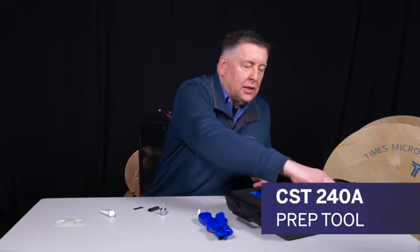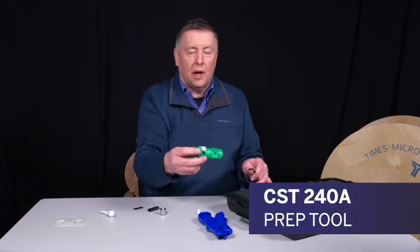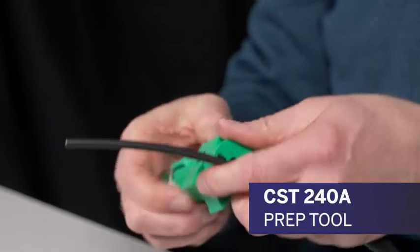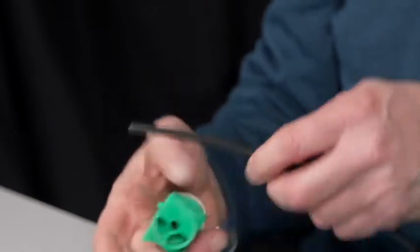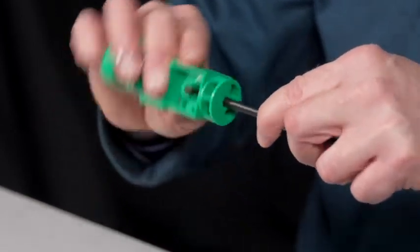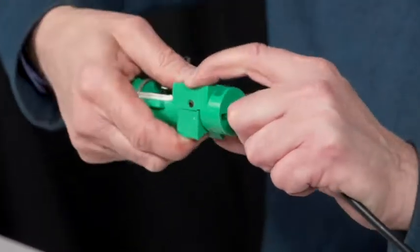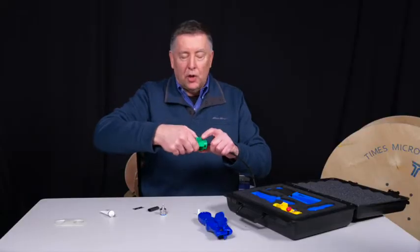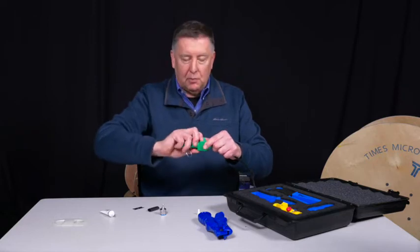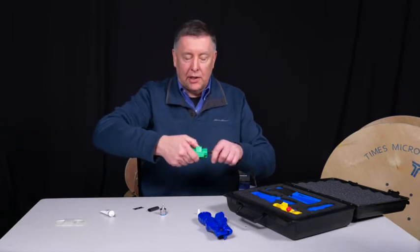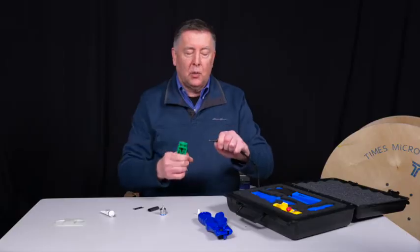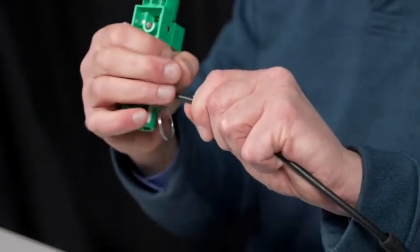At that point, we're going to take our CST-240A tool out of the kit. We're going to open up side one, make sure there's nothing stuck in there. Pop that onto the cable like so. Push down that thumb switch and rotate the tool around the cable. Once that bottoms out, make one extra revolution at least. Leave it depressed and pull it. And what you're doing is you're taking that whole pellet off, adhesive and all.